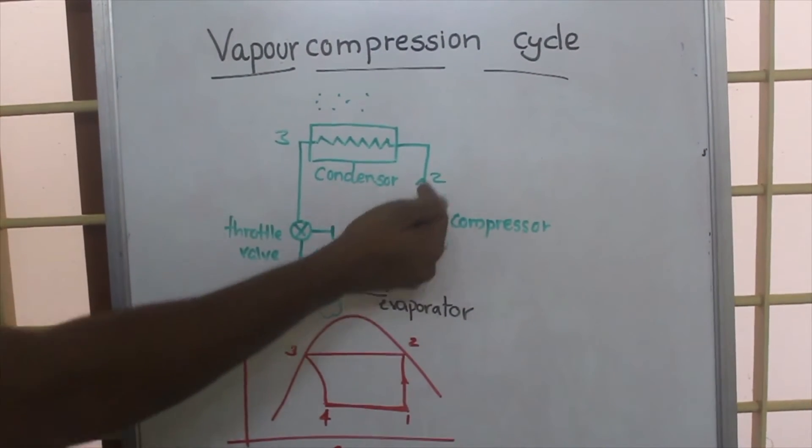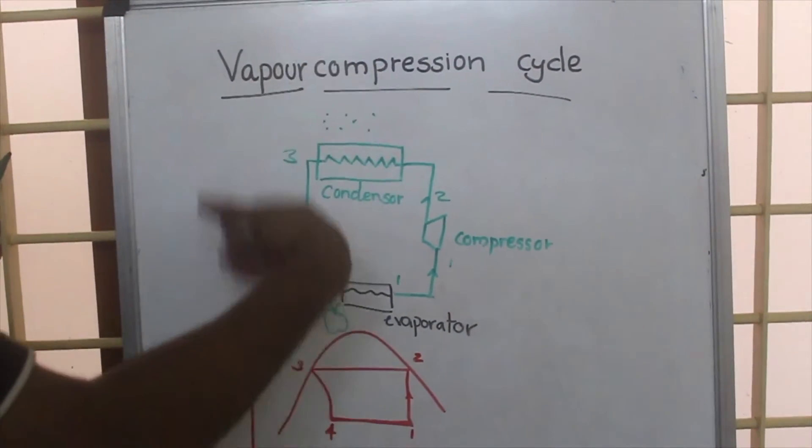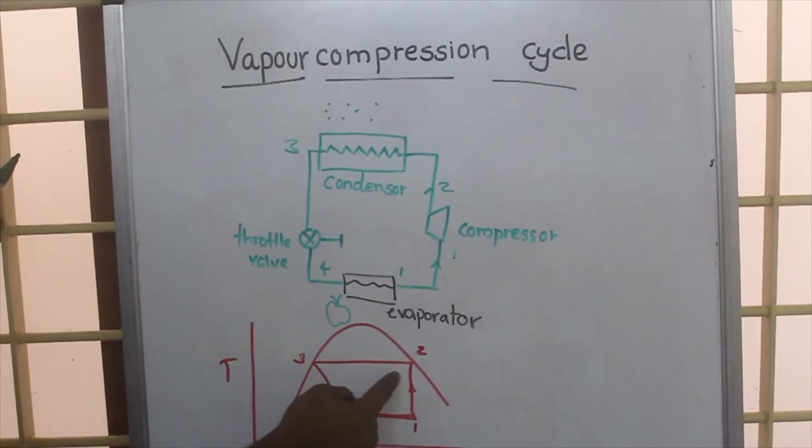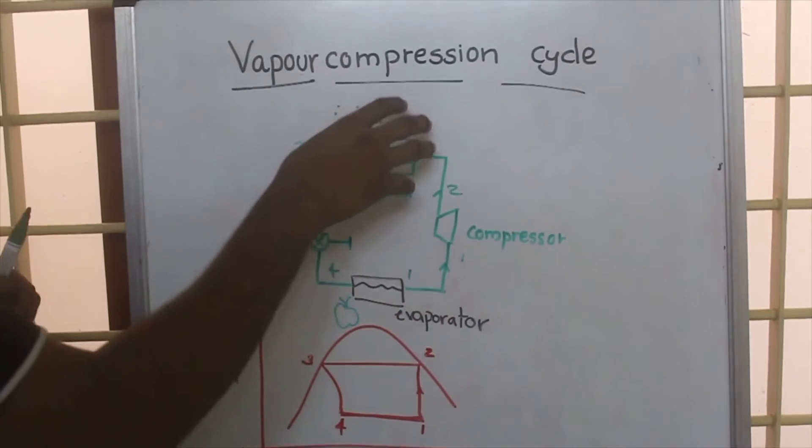After isentropic compression, the working fluid enters the condenser. In the condenser, the working fluid rejects heat to the surrounding air. So in process 2-3 it rejects heat to the air.